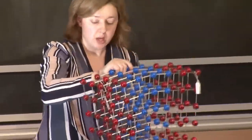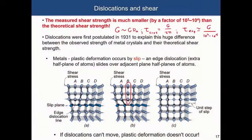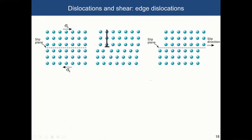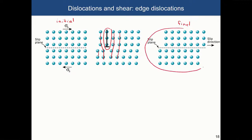This is called an edge dislocation. People postulated that this would reduce the stress required to permanently deform the material. Going from the initial to the final plastically deformed part of the crystal, you introduce this additional plane. When this dislocation propagates throughout the material by applied shear stress, you eventually end up in a configuration that is plastically deformed — and the initial and final states would be identical.